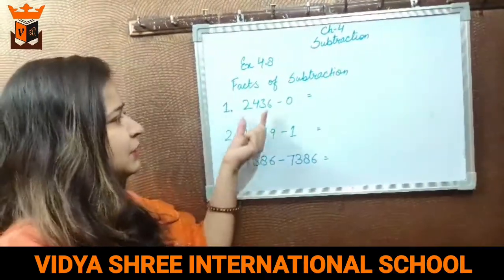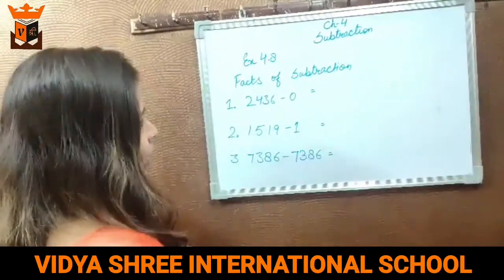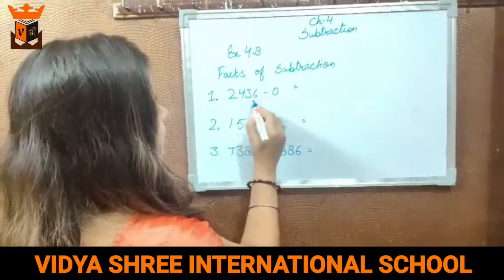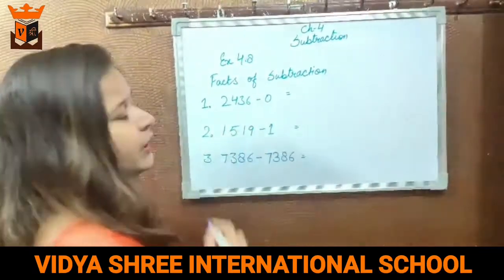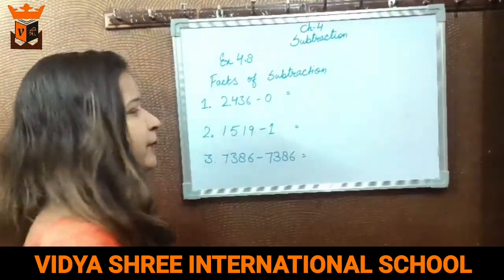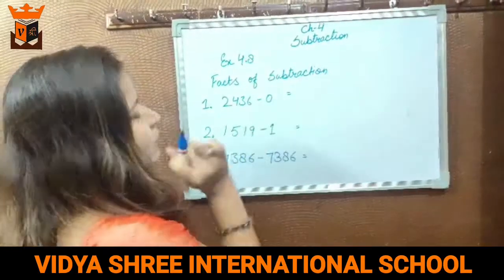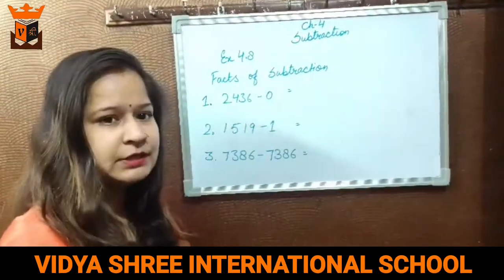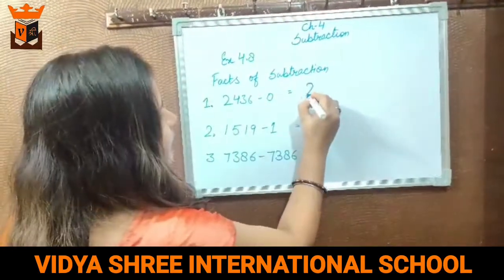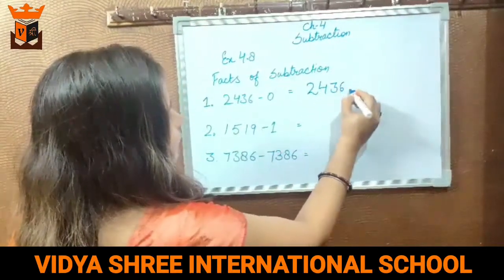Jab hum kisi number mein se 0 deduct karte hain, to answer hume number hi milta hai. Yaani ki, 0 kya hota hai? Nil hota hai, jis ki koi value nahi hoti hai. Jab hum kisi number mein se 0 minus karo ge, yaani ki aap kuch bhi minus nahi kar rahe ho, to aapko kya milta hai as a result? Number itself.